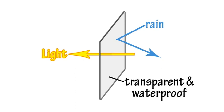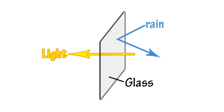So we want to choose a material that is both transparent and waterproof when making a window. Glass is transparent and waterproof, so it is a useful material for making windows.